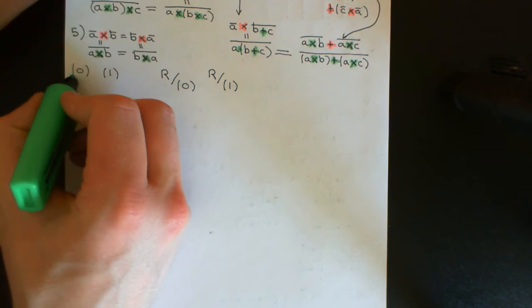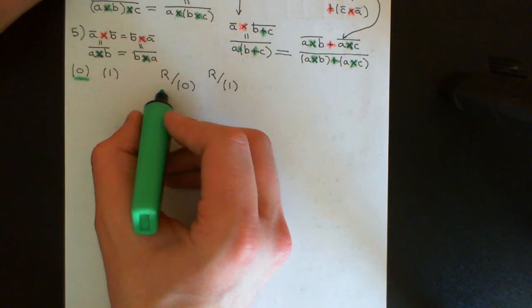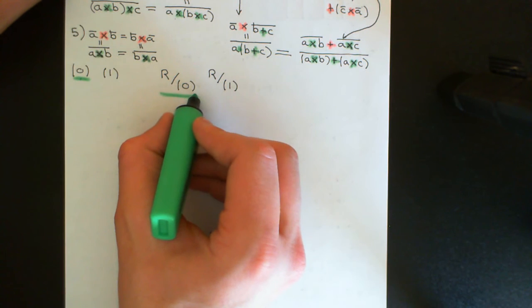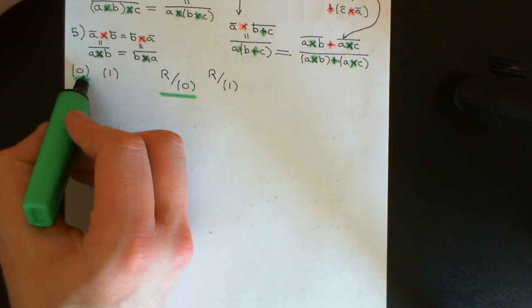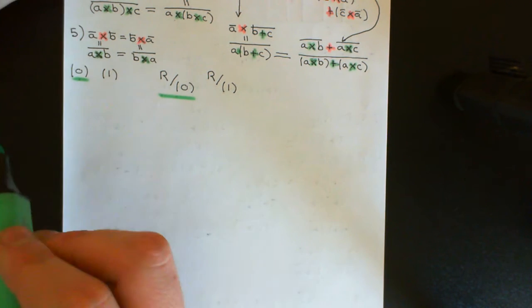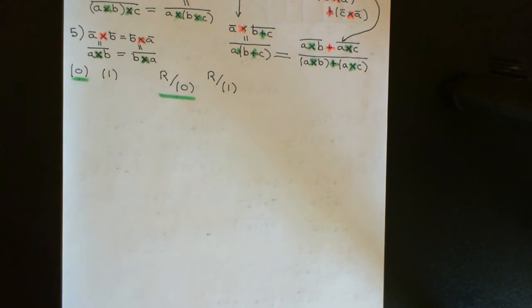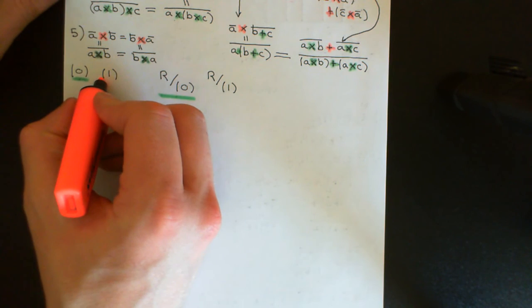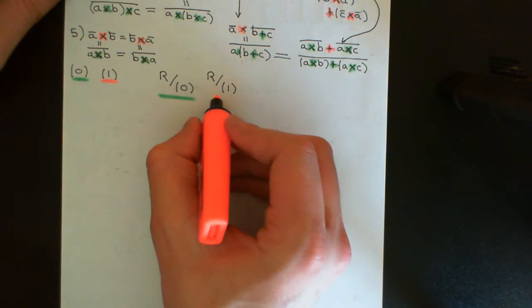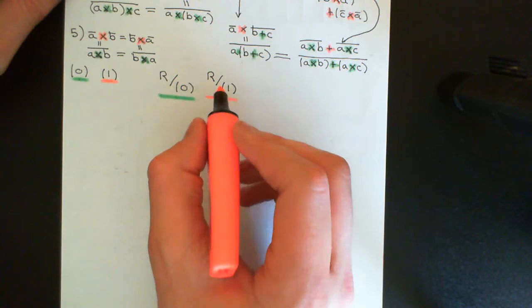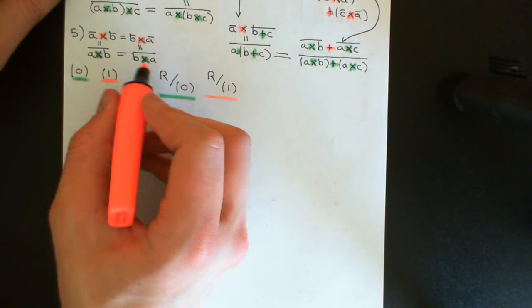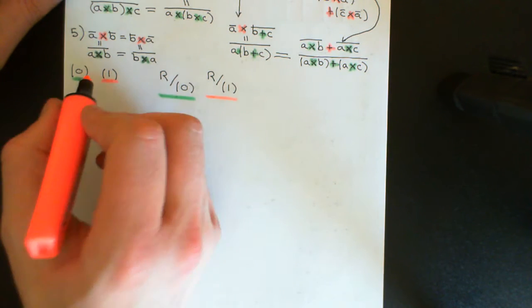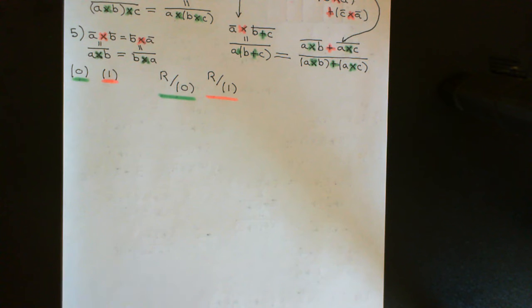Just to remind you, the zero ideal is the principal ideal generated by zero and it's the ideal that just contains the additive identity of your ring. Whereas the unit ideal, which is the principal ideal generated by one, will contain absolutely every single element of the ring because it will have to contain all multiples of one. And of course, when you go through the entire ring and multiply every single element by one, you get every single element of the ring back again.